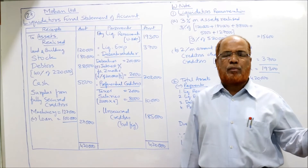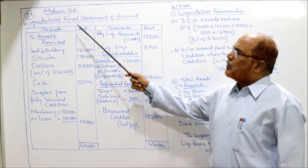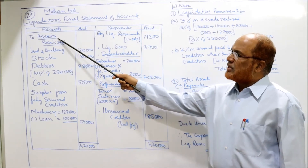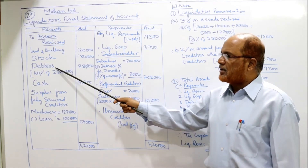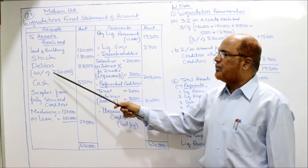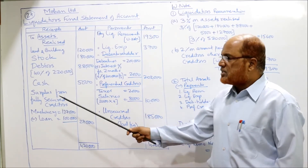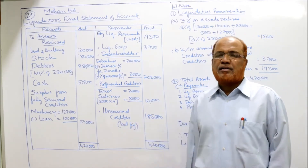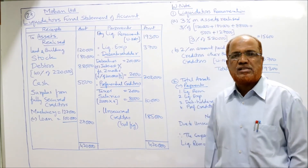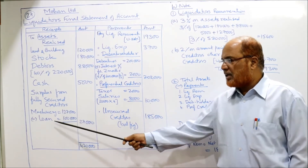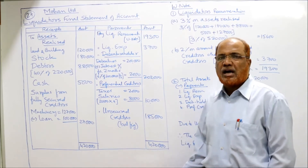Now prepare the liquidator's final statement of account. On the receipts side — assets realized: land and building Rs.1,20,000; stock Rs.1,80,000; debtors — 40% of Rs.2,20,000 = Rs.88,000; cash in hand Rs.5,000. Surplus from fully secured creditor: machinery realized Rs.1,27,000 less loan Rs.1,00,000 = Rs.27,000 surplus. Total receipts in the hands of the liquidator: Rs.4,20,000.